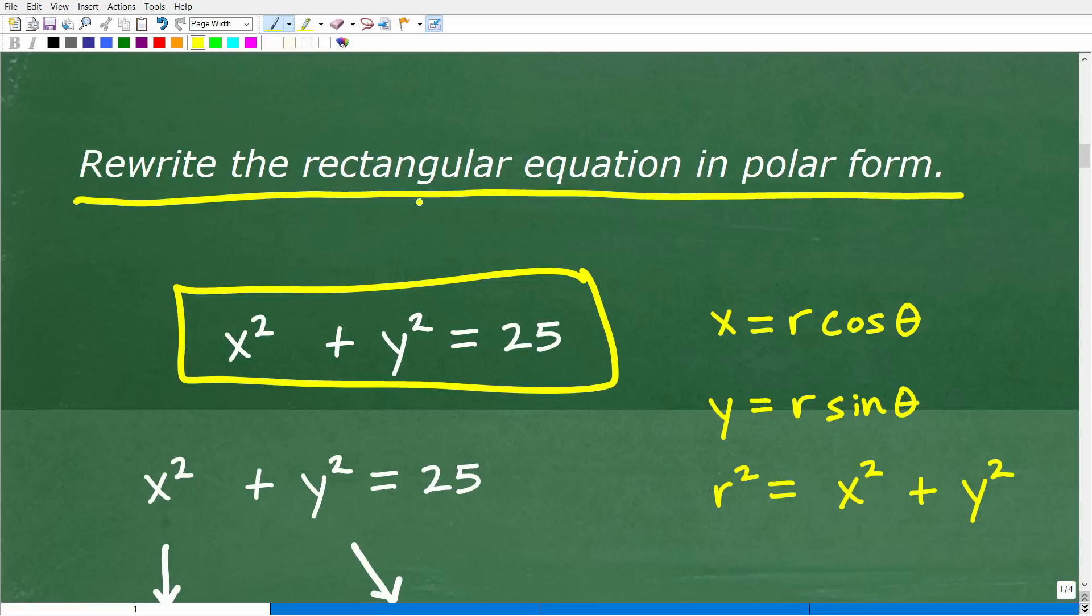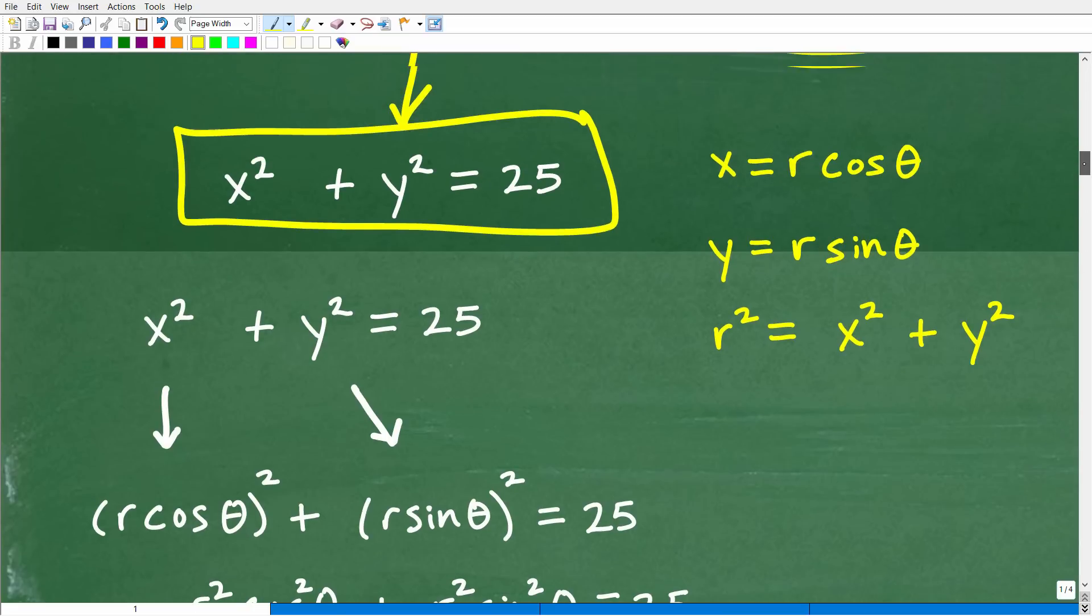So this is our problem. We have x squared plus y squared is equal to 25. This equation is a rectangular equation. In other words, the points, the way we would describe a point with this equation is an ordered pair x, y. And we want to rewrite it into polar form. So that's going to be r theta. All right, so how do we do this? We need to keep in mind these equivalencies right here, these formulas.